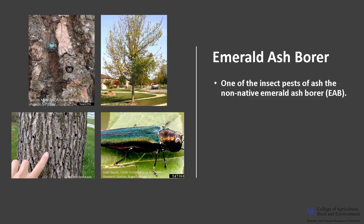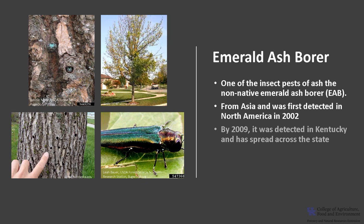One of the most destructive insect pests of ash is the emerald ash borer, or EAB. This invasive insect pest has caused great mortality in North America to our ash trees. It was introduced from Asia and was first detected in North America in Michigan around 2002. By 2009 it was detected in Kentucky and has since continued to spread across the state.